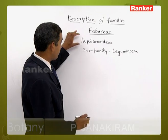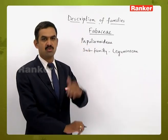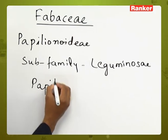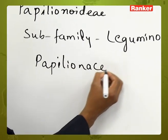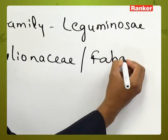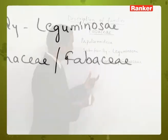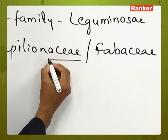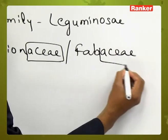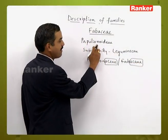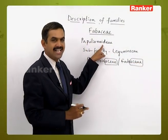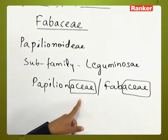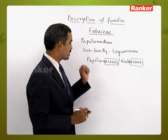Later, the level of this subfamily was elevated to the family level, and the name of the family was changed to Papilionaceae. As we know, the name of the family should end with '-aceae' — the suffix '-aceae' should be there. As it was a subfamily initially, it was ending with '-oideae' (O-I-D-E-A-E). But as it was elevated to the position of family, the '-oideae' was replaced by '-aceae'.